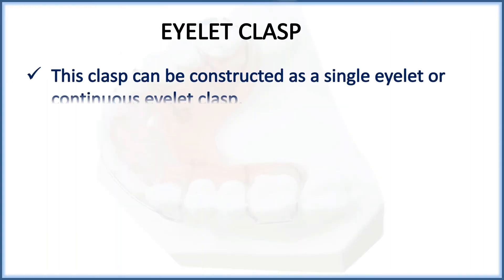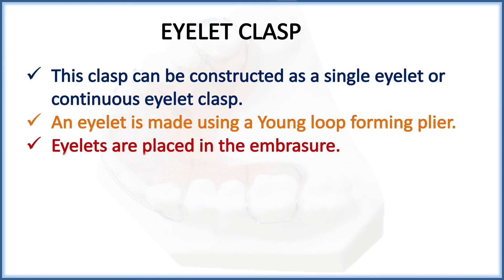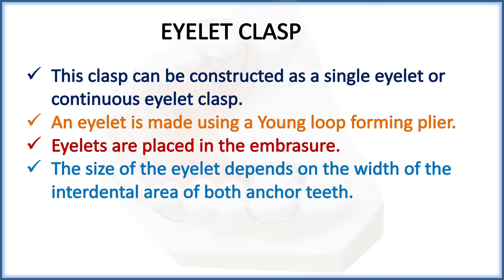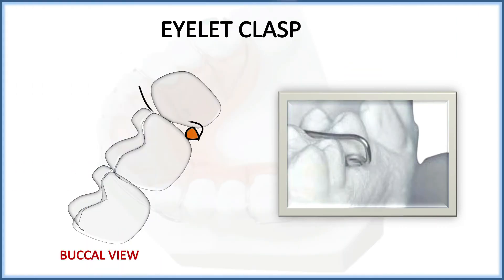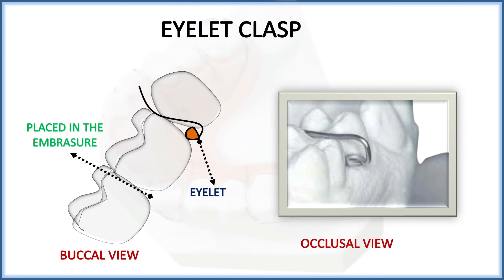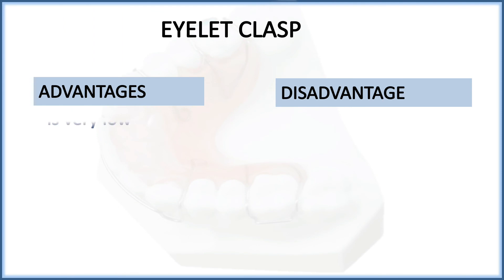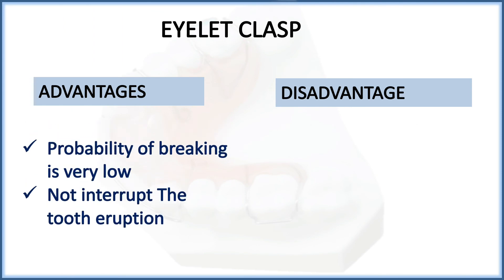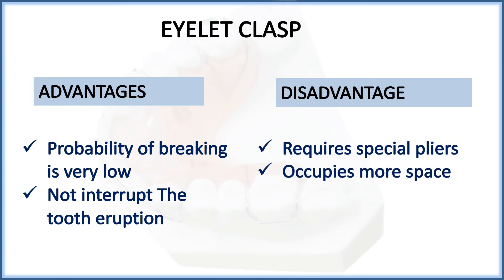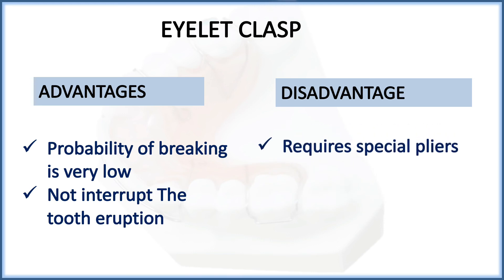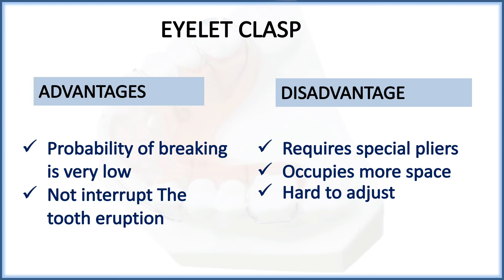The eyelet clasp can be constructed as a single eyelet or continuous eyelet clasp. The eyelet is made using a Young loop-forming plier. Eyelets are placed in the embrasures, and their size depends on the width of the interdental area of both anchor teeth. The buccal view shows the eyelet placed in the embrasure. Advantages: probability of breaking is very low and does not interfere with eruption. Disadvantages: requires special pliers, occupies more space, and is hard to adjust.